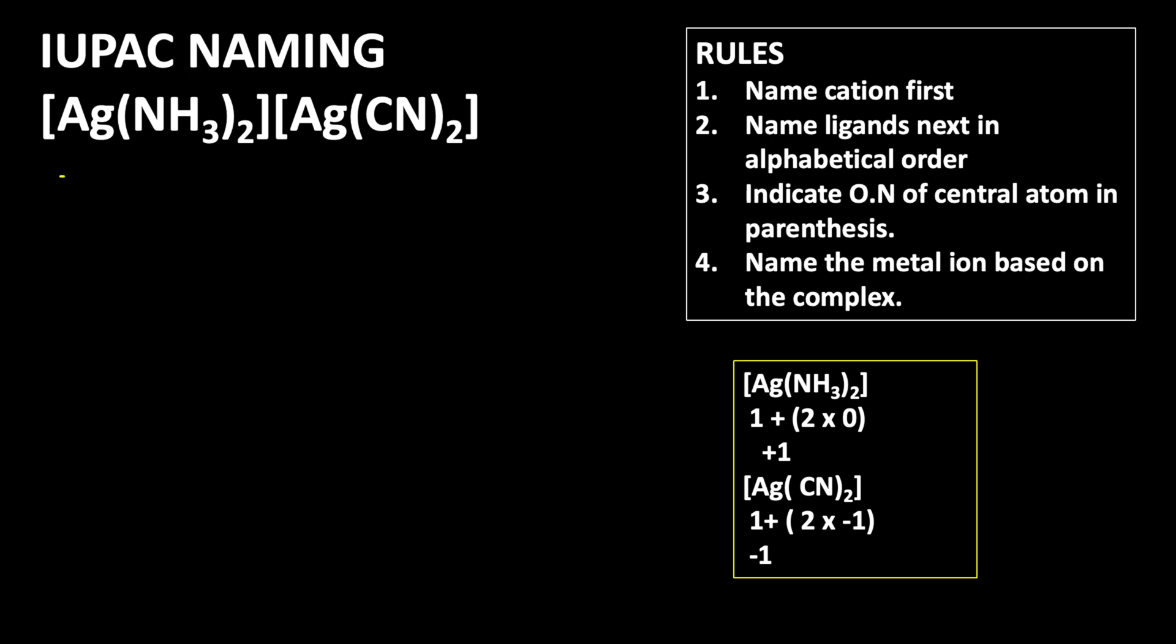For the first one, it is cationic complex. As per the rule, first we write the cationic complex ion, then the second one is anionic complex ion. The charge carried by the anionic complex is minus 1, and this one carries plus 1 charge.